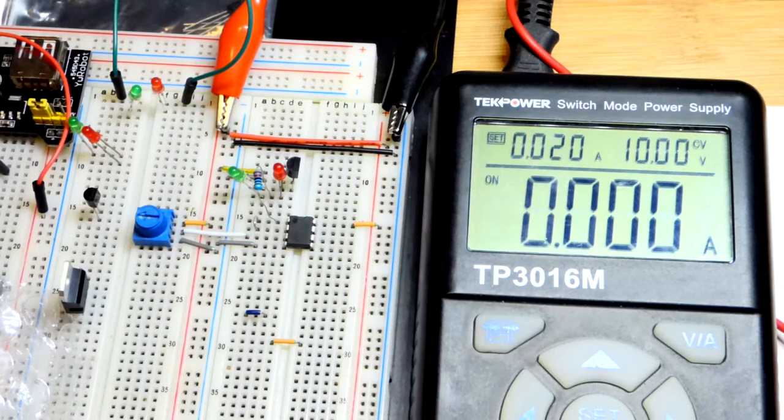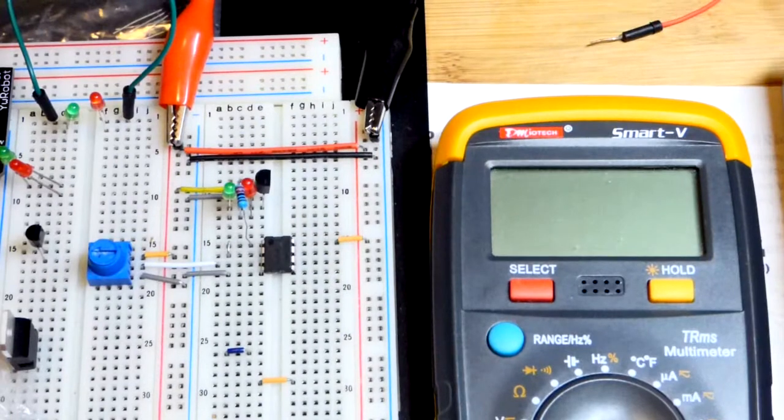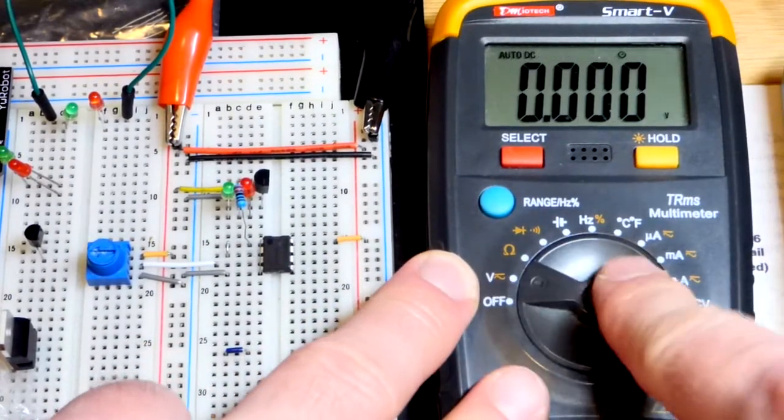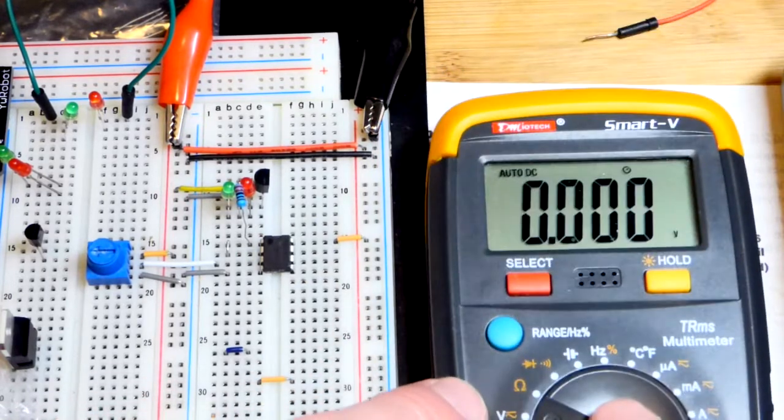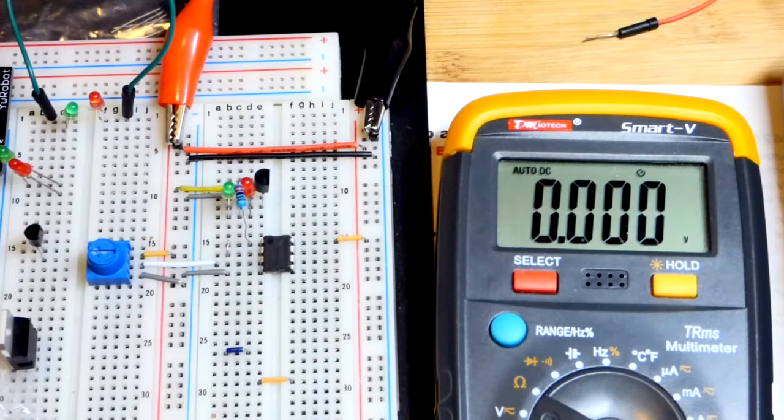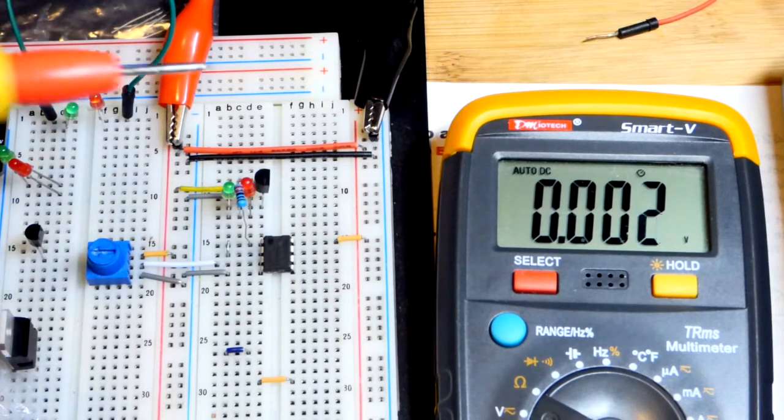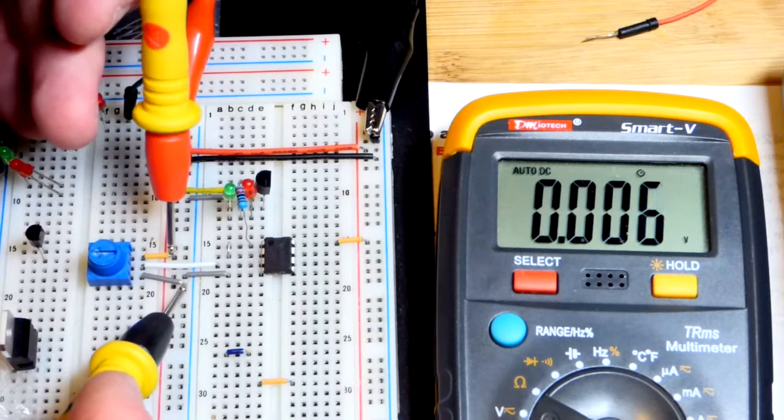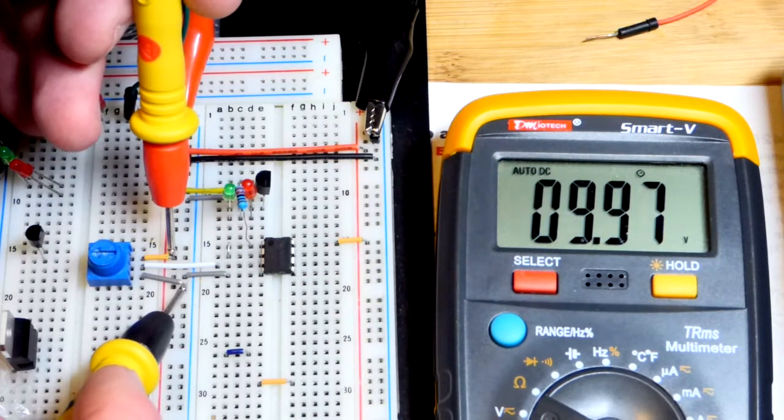Now we have the multimeter. I'll set it to measure voltage. It's auto-ranging so I don't have to set it to a range, it does that automatically. First we can look at the supply voltage by going to any two points that connect directly to the rail. There we go. We have 9.7 volts.